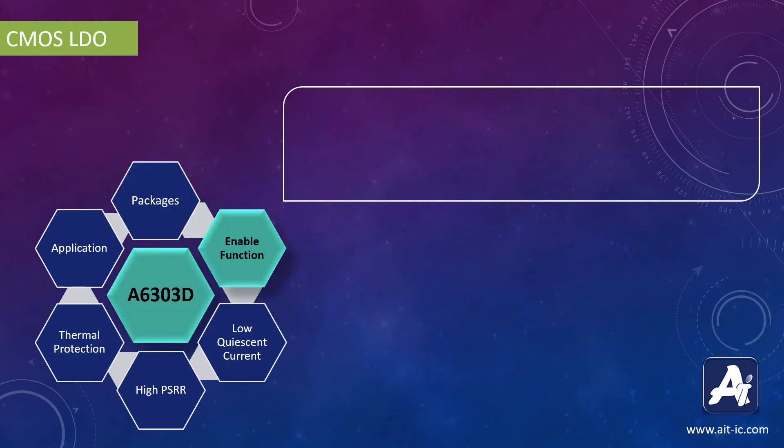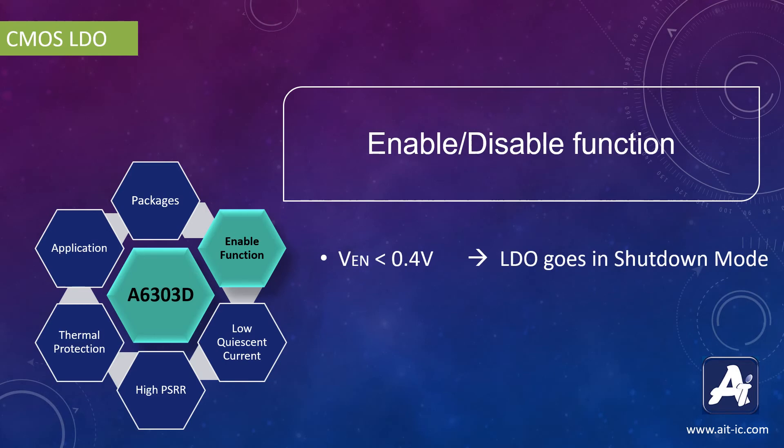This IC has an enable pin VIN which has an internal pull-down resistor. When the voltage on this pin falls below 0.4V, the regulator will go into shutdown mode, which ultimately reduces power consumption in standby situations. When the voltage at the VIN pin is more than 1.2V, it enables the LDO IC.